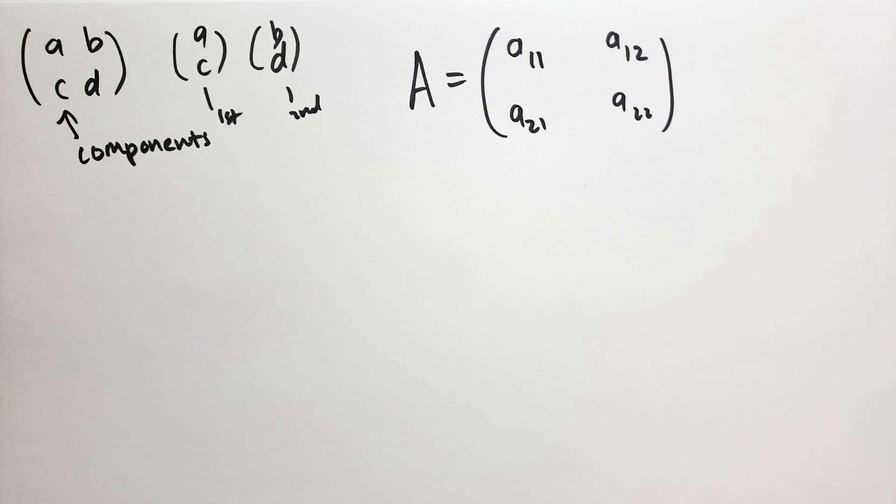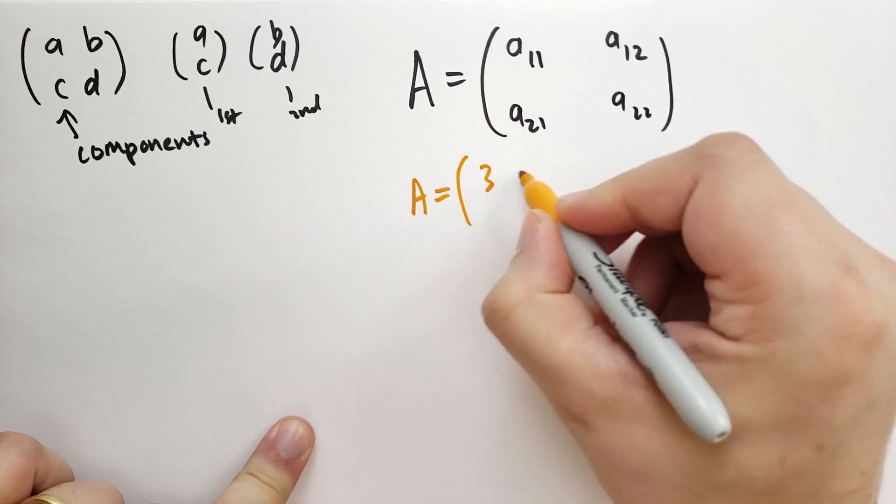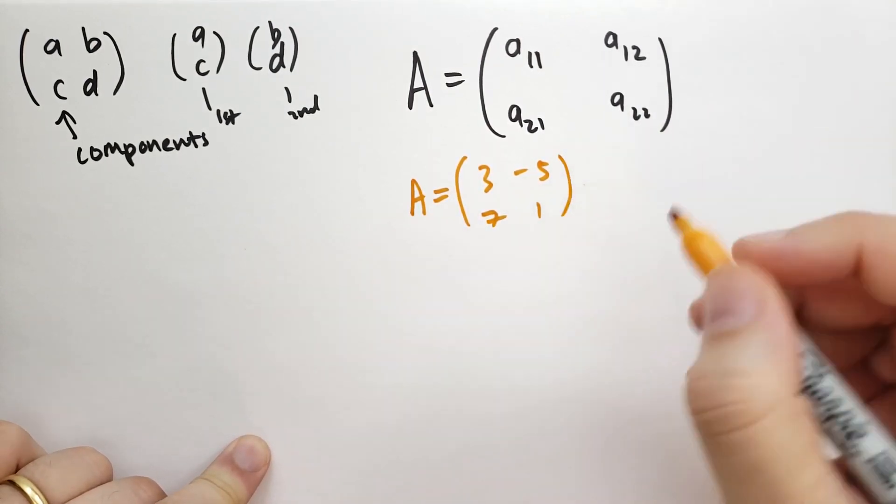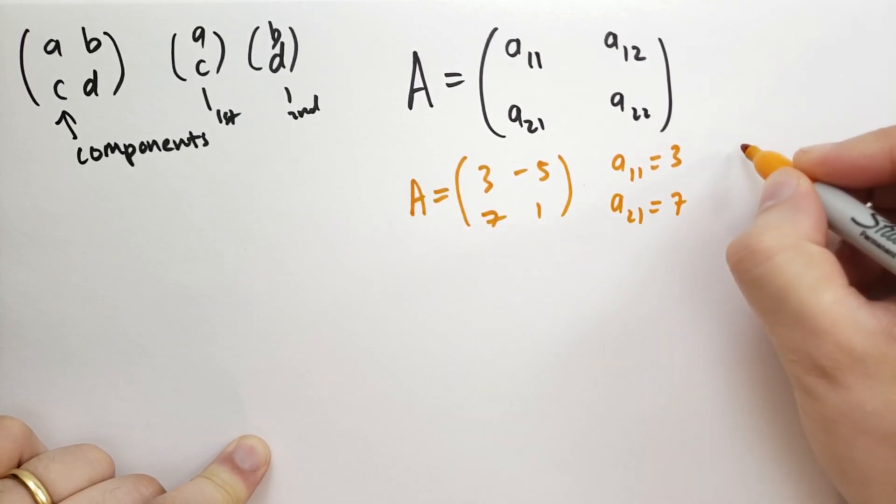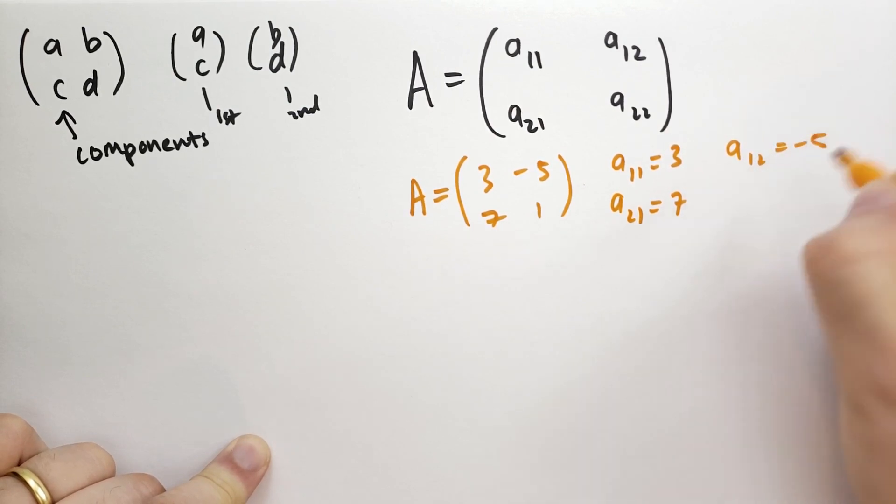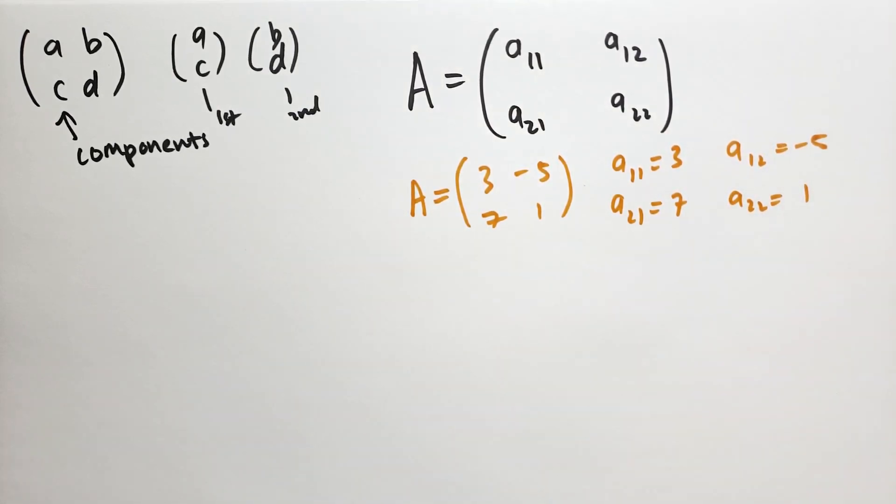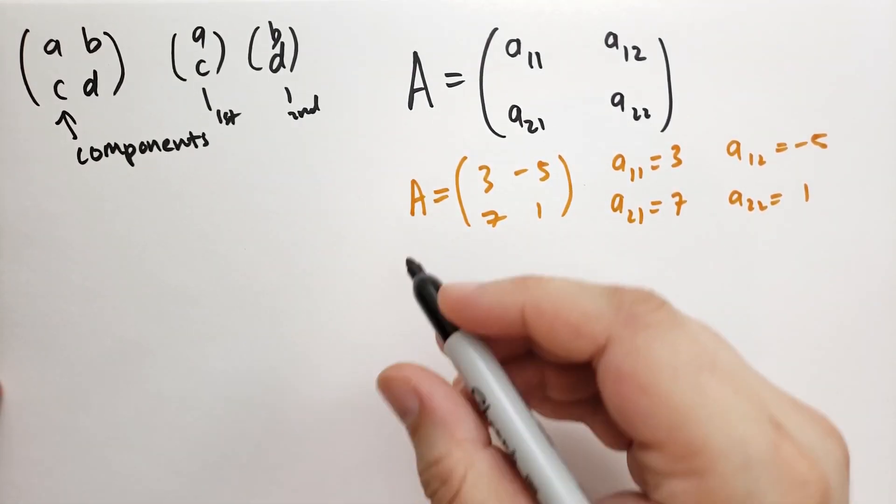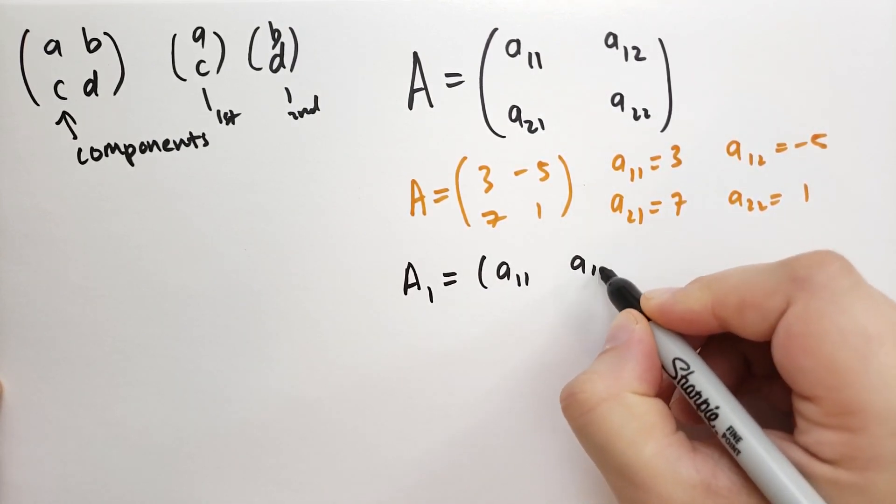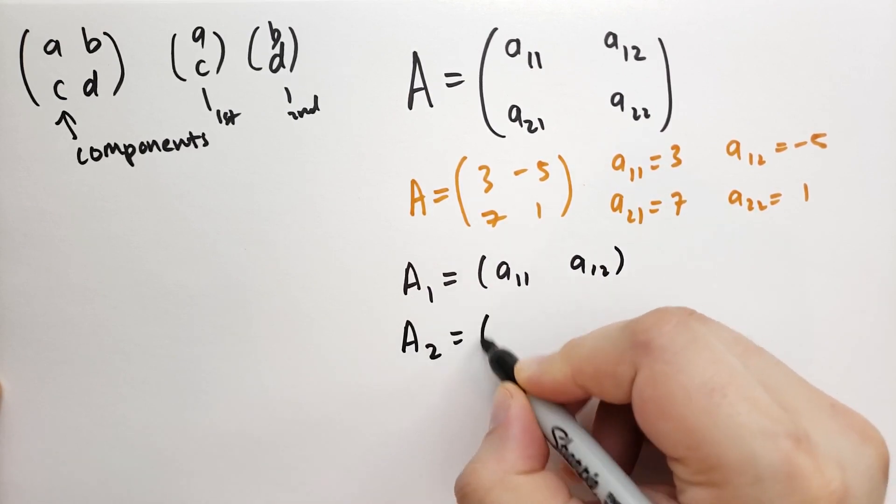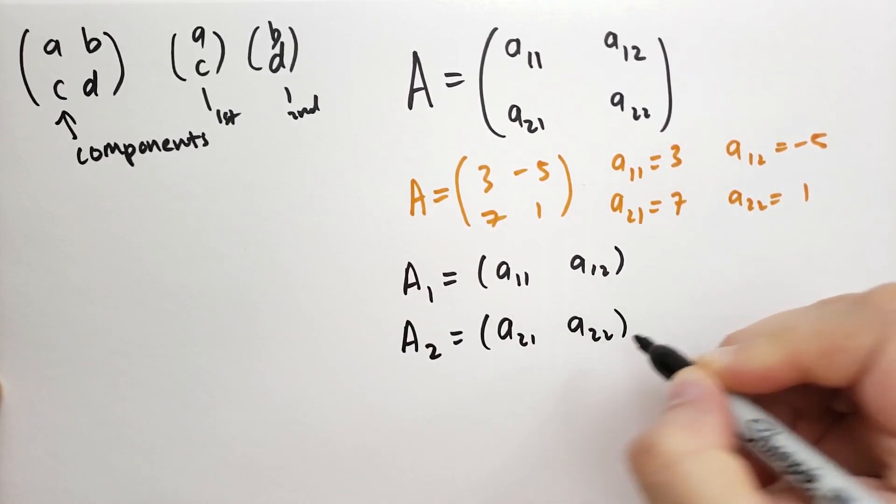Let's give an example. Suppose that we had our A was equal to 3 minus 5, 7, 1. So a11 is equal to 3, a21 is equal to 7, a12 is equal to minus 5, and a22 is equal to 1. We can break this up into rows using subscript rows. So a1 is the first row, that's a11, a12. And a sub 2 is the second row, that's a21 and a22.